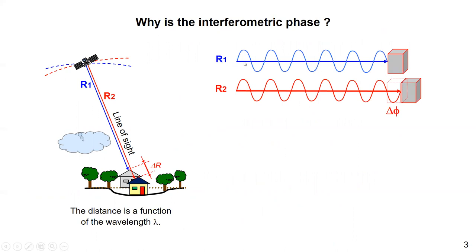We can think of R1 as measured at a satellite-to-target range. The advantage of satellites is that they can return to the same area to collect data after a certain period of time — for example, 6 days or 10 days with the Sentinel-1 constellation. We assume that during this period there is a displacement — for example, subsidence, earthquake, or volcano — that caused the target position to change. By taking the difference R1 minus R2, we can directly calculate the delta R difference.